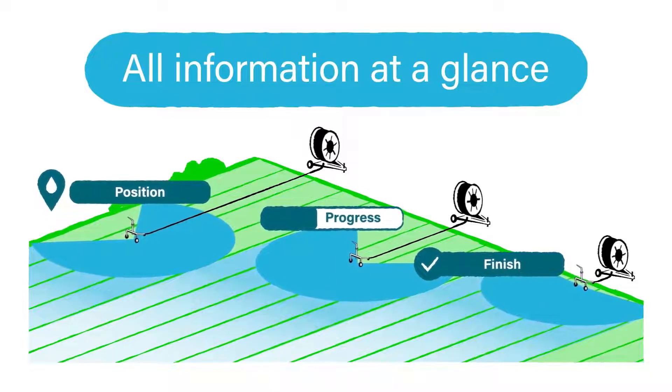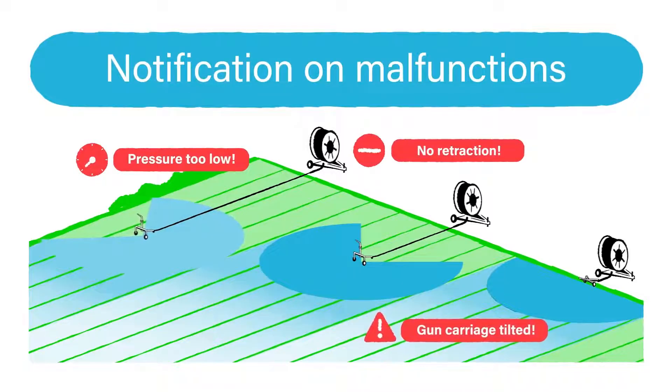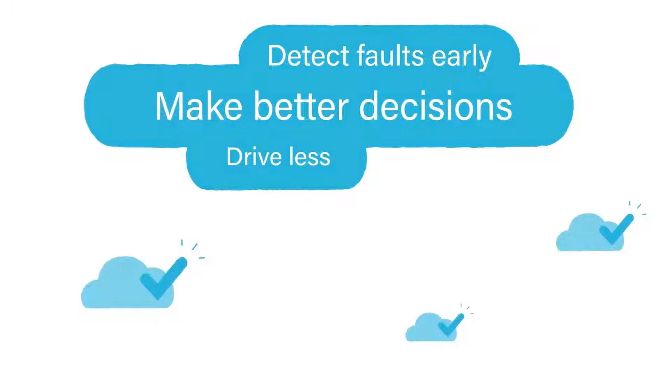In case of a malfunction like low pressure, no retraction, or even a tilted gun cart, Rain Dancer will send a notification. So you'll spend less time for check visits and focus on the machines that need attention most.